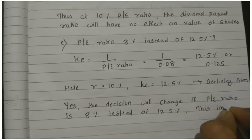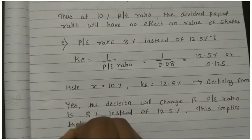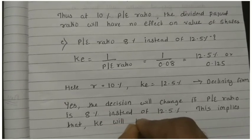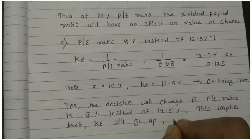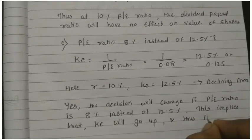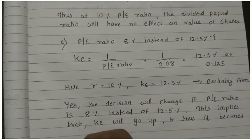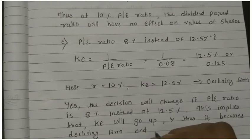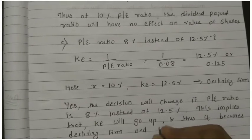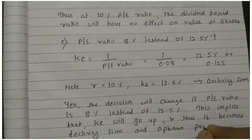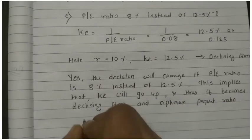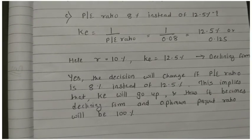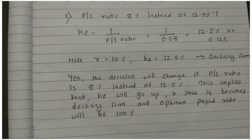This implies that KE will go up, and thus it becomes declining firm. It becomes a declining firm and optimum payout ratio is what? Optimum payout ratio will be 100%.